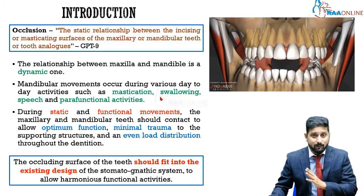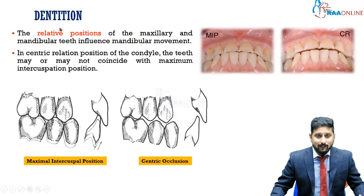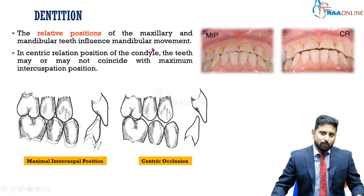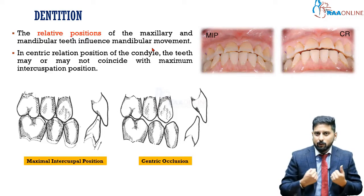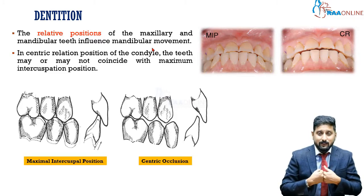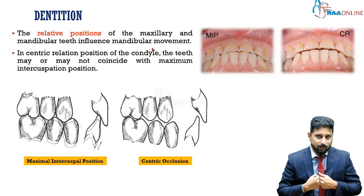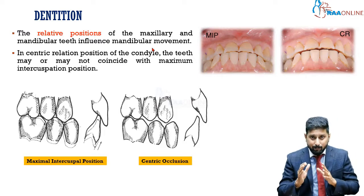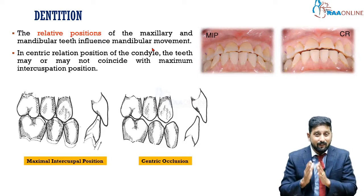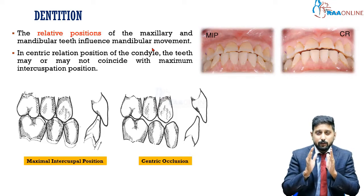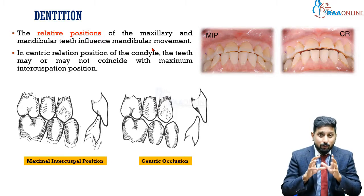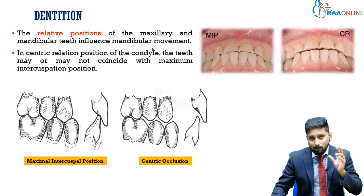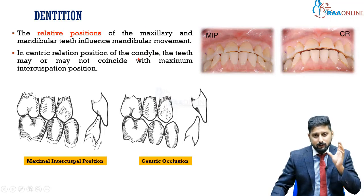The relative position of upper and lower teeth will influence mandibular movement. When chewing, the final pathway is when upper and lower teeth meet — only then can you crush food, masticate, chew and swallow. So the occlusal aspect of the upper and lower teeth influences the mandibular pathway; even though it is a small part of the pathway, it is a very important part.